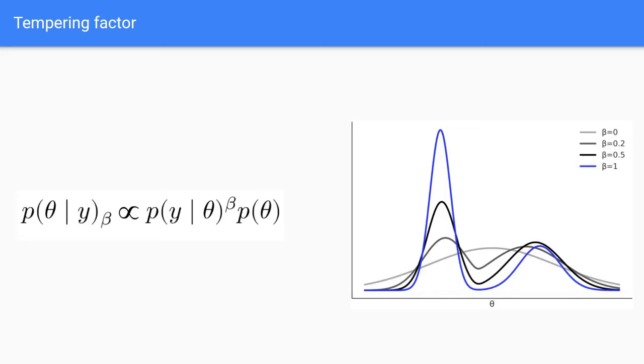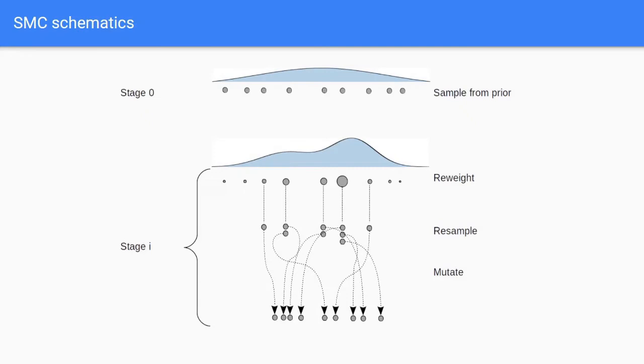This way, progressively decreasing the tempering factor can be very helpful in sampling multimodal distributions, where one of the modes may be missed by other sampling methods. Here we have a schematic representation of how the sampling algorithm would progress.